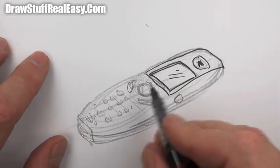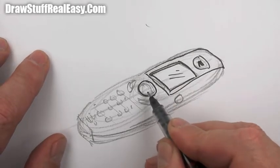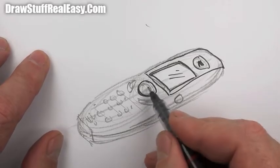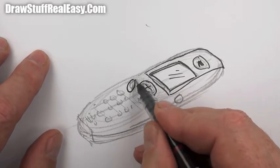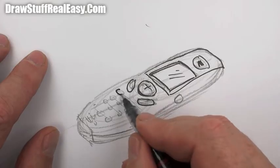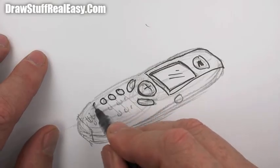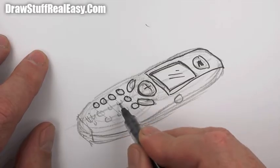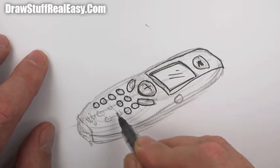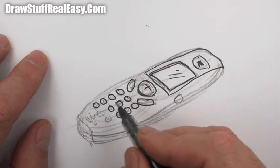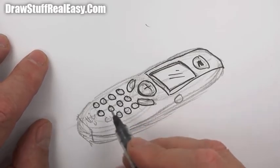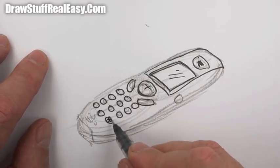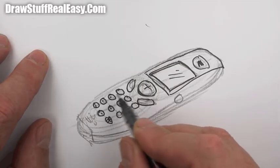Two little yes or no buttons. And you want it to be one, two, three, four, five, six, seven, eight, nine, star, zero, hash. Just going to put those in there.